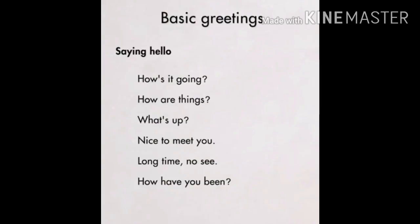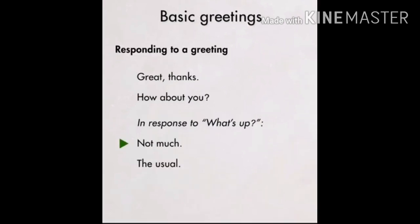So whenever you start any conversation with any of your friends or family members, the first things we must include are the basic greetings — like saying hello, how's it going? How are things? What's up? Nice to meet you. Long time no see. How have you been? 'Long time no see' means it's been a very long time since we've seen each other. 'How have you been?' means kaise hai aap. These are the ways in which you can greet someone, say hello, or start a conversation.